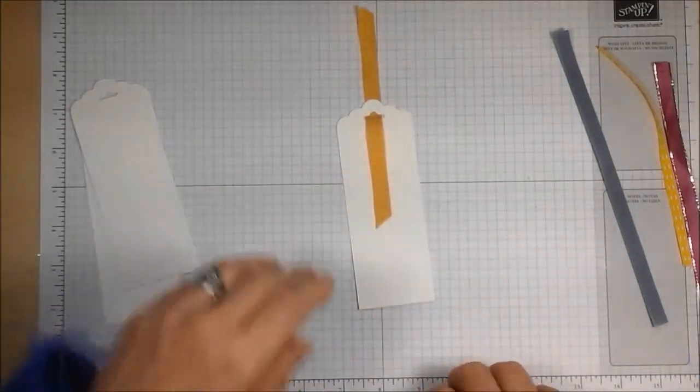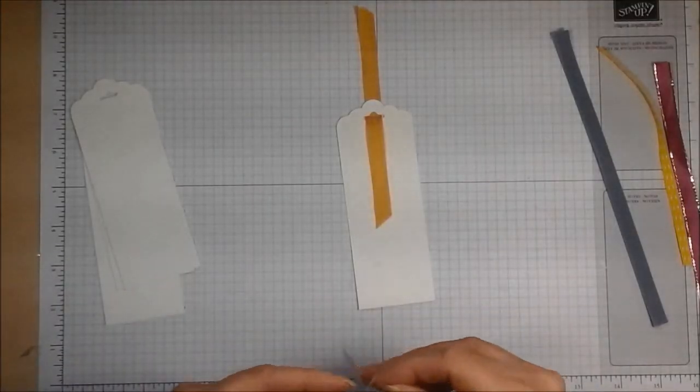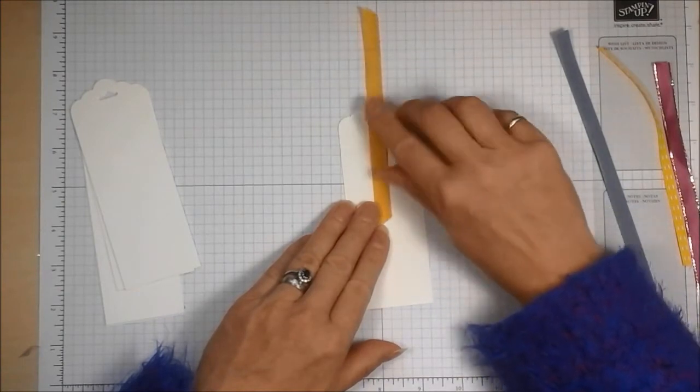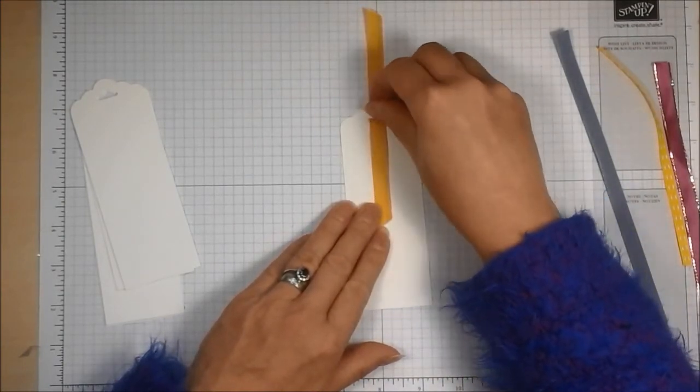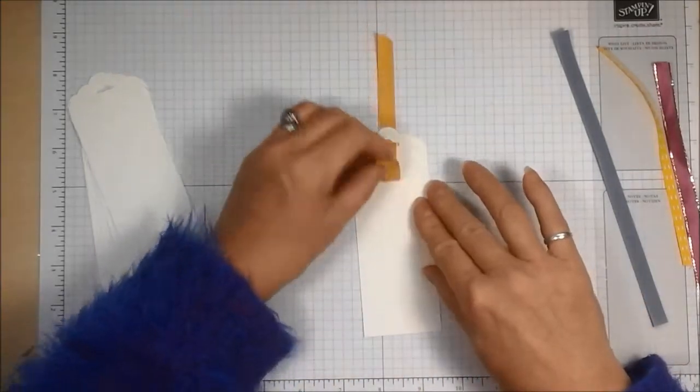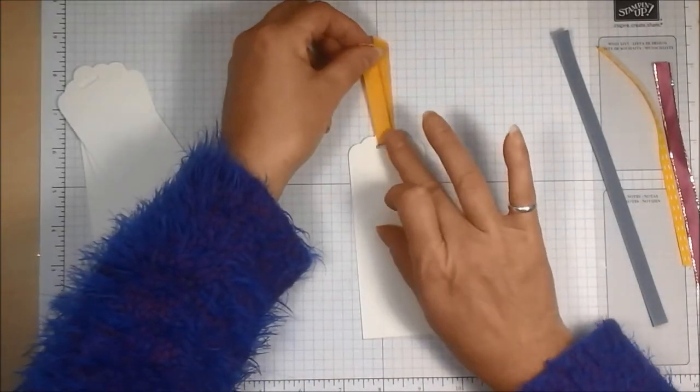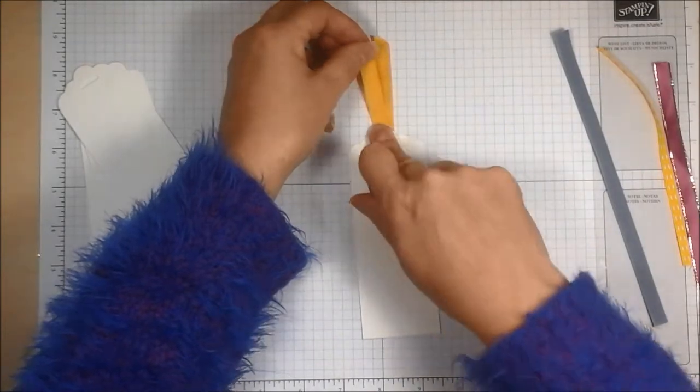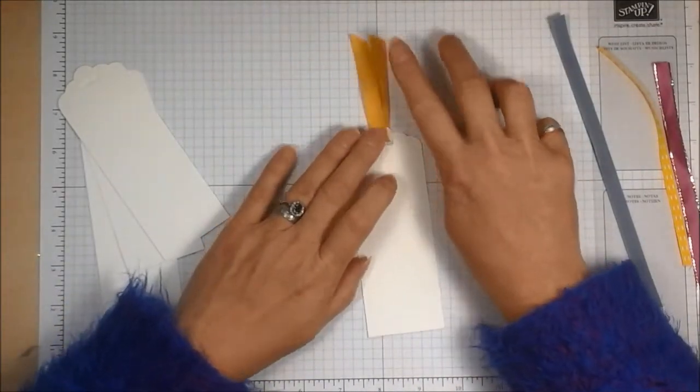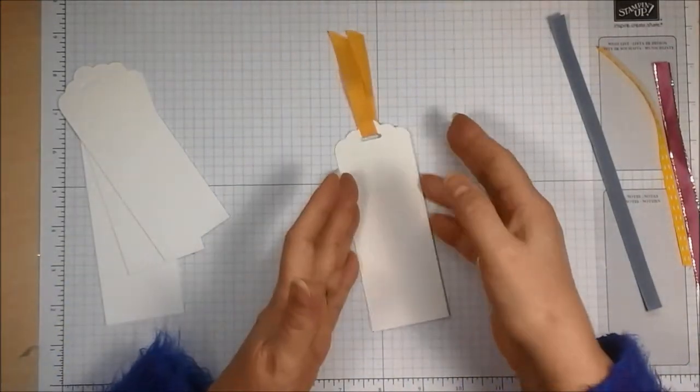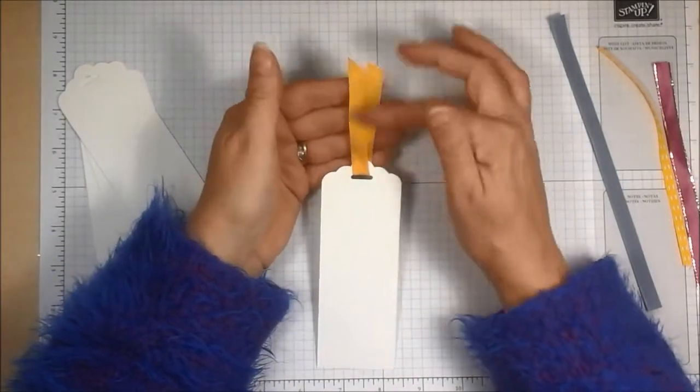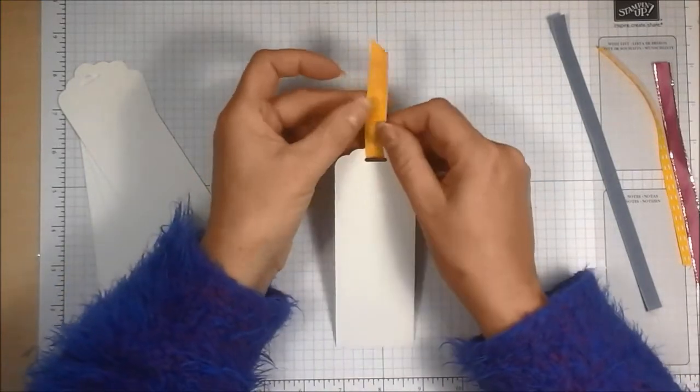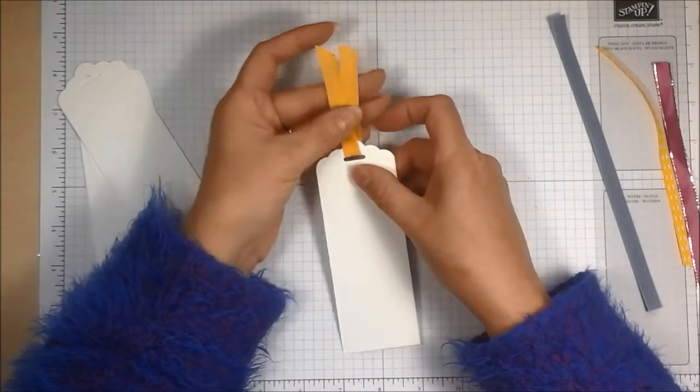fold the ribbon in half and just tip it over very slightly, so it's just slightly leaning towards the left. Turn it over, take another mini glue dot and put it in the same place on the other side of your bookmark or your tag. Then if you do the same thing, you bring your piece of ribbon up, press it down onto the glue dot.